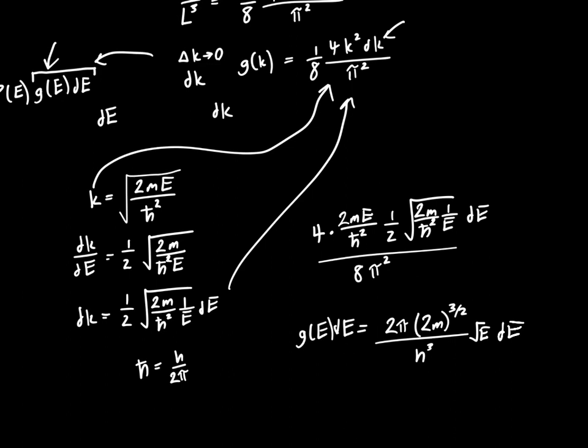And is this answer correct? No, this answer is actually wrong. So the reason that it's wrong is that each state, each quantum state, can actually be occupied by 2 electrons. So a spin-up electron and a spin-down electron. So we need to multiply this result by 2.